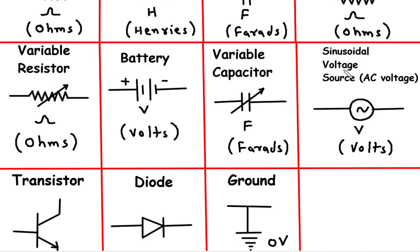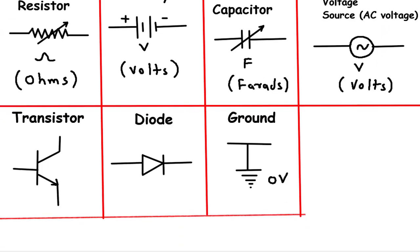8. Sinusoidal voltage source, AC voltage. Next, we have the sinusoidal voltage source, which represents an alternating current, AC voltage. It is denoted by a wavy or squiggly line symbol. Unlike direct current, DC, which flows in one direction, AC voltage alternates its polarity in a sinusoidal waveform. AC voltage sources are commonly used in power systems and electronic devices.